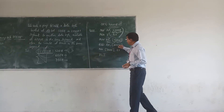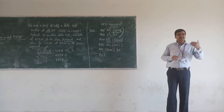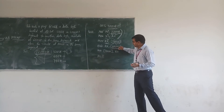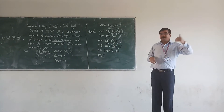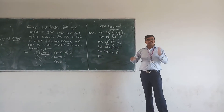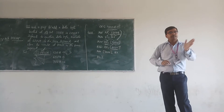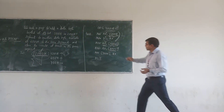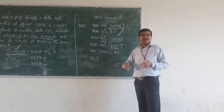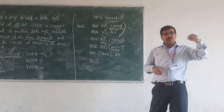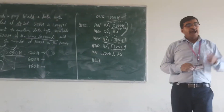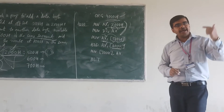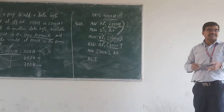Next, ADD AX, 600H. This means the second number, which is at the 600H memory location, is added with the current contents of the AX register, and the result is stored back in the AX register. So AX register now holds the result.